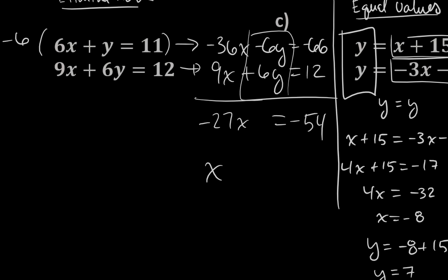Now I need to divide both sides by negative 27. So x, I believe, should be negative 54 divided by negative 27, which is actually positive 2. It's a nice number.